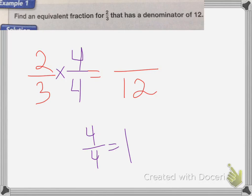All we're doing here is changing the name. So I have 3 times 4 equals 12. So 2 times 4 is equal to 8. So my answer is going to be 8 twelfths is my equivalent fraction.